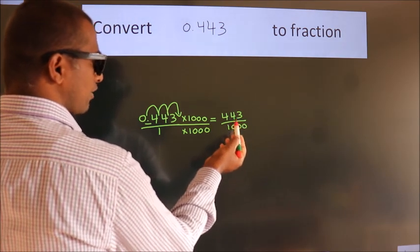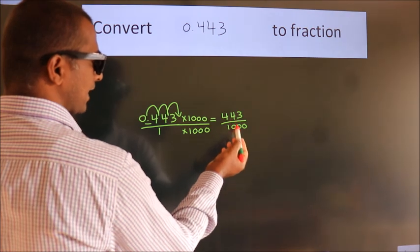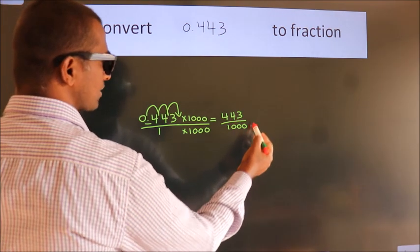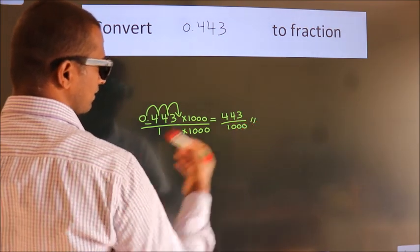This cannot be simplified any further. So this is our fraction — 443 over 1000.